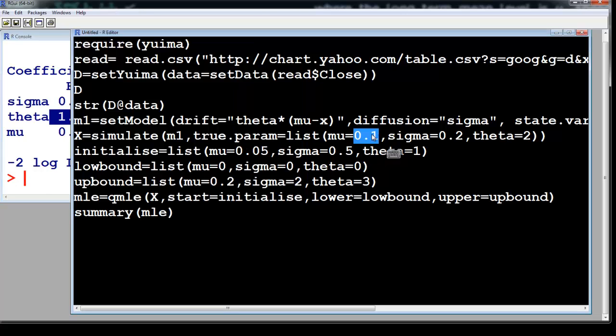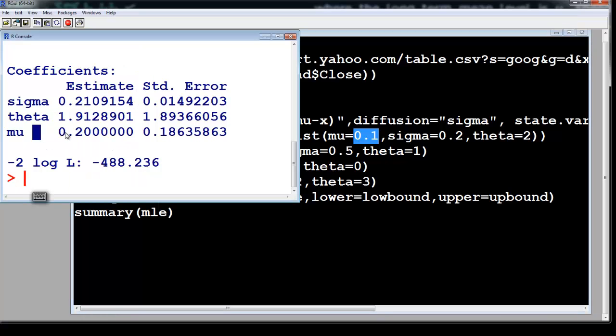So notice that mu we set as 0.1 but the value you're getting is 0.2. Theta we set as 2, we are getting as 1.9. Sigma we set as 0.2, you're getting 0.21. So notice at least for mu we are not getting the correct value.